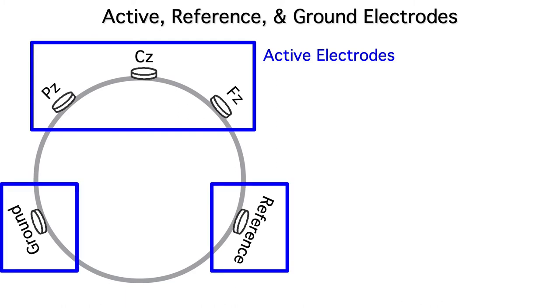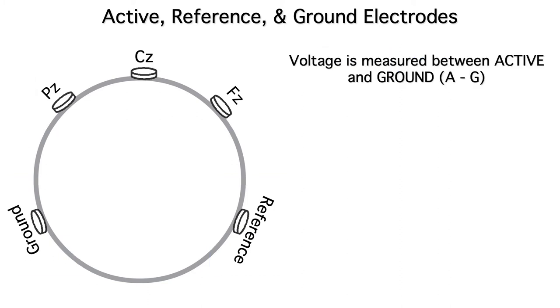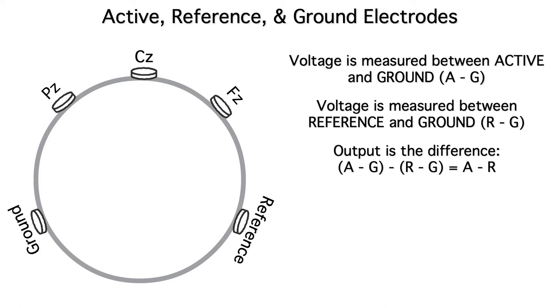Usually, we use the same reference and ground for all the active electrodes. Because voltage is the potential between two sites, we initially measure the voltage between an active electrode and the ground electrode. Remember, that's the same as the absolute voltage at the active electrode minus the absolute voltage at the ground electrode, or A minus G. We also measure the voltage between the reference electrode and ground, which is equal to R minus G.